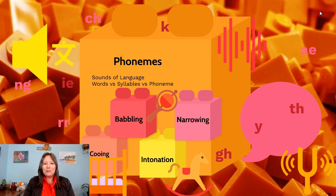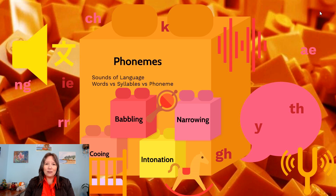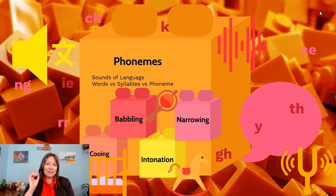A phoneme is considered the smallest unit of sound in a language — not the same as a word, and not the same as a syllable. A word can be made up of many sounds; most words that are more than one letter long have multiple phonemes. Even a one-syllable word will have multiple phonemes in most cases.